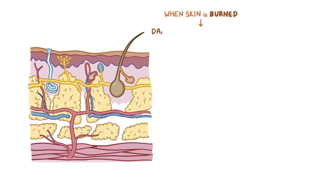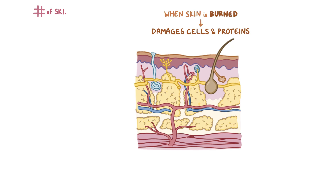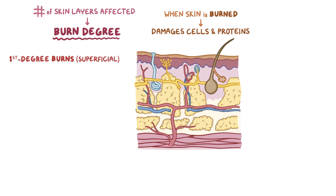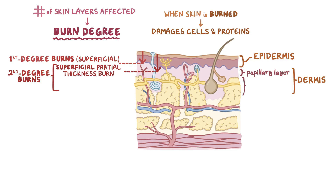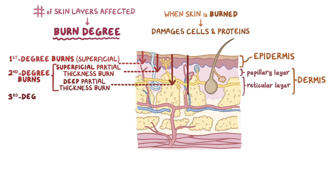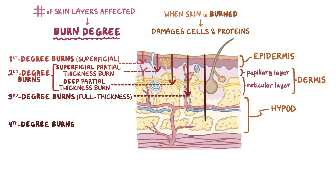When the skin is burned, it damages cells and the proteins within them, and the number of skin layers affected determines the burn degree. In first degree burns, also called superficial burns, the burn only affects the epidermis. In second degree burns, the burn affects the epidermis and the dermis. If only the papillary layer is burned, it's considered a second degree superficial partial thickness burn. But if the burn reaches the deeper reticular layer but doesn't extend through the entire layer, then it's considered a second degree deep partial thickness burn. In third degree burns, also called full thickness burns, the entire epidermis and dermis are affected. And finally, fourth degree burns extend into the hypodermis.